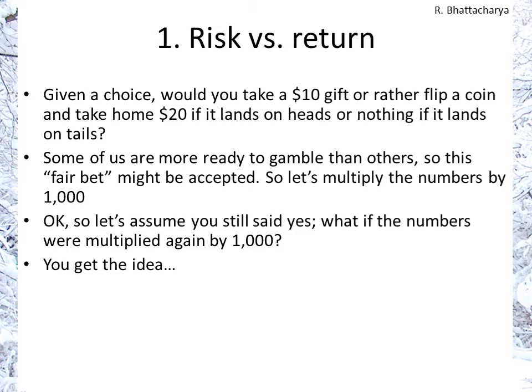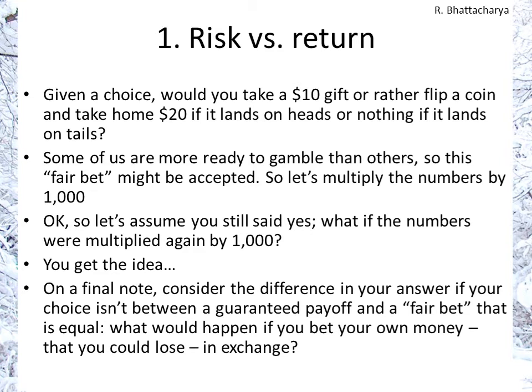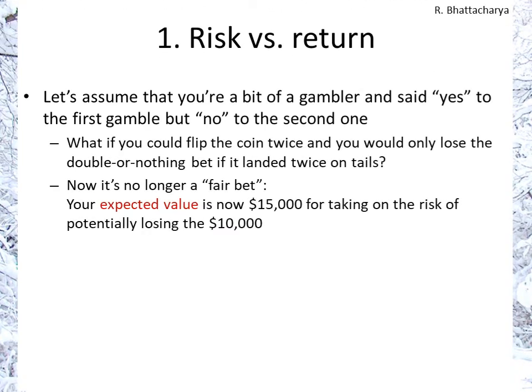This would look different if instead of being offered $10 on double or nothing, you were offered a choice of flipping a coin and either losing $10 or winning $10. Let's take an example. Suppose you said no to the second gamble — okay to gamble $10 but not $10,000. What if I changed the bet so you could flip the coin twice and only lose the $10,000 if it landed twice on tails? If it landed once or twice on heads, you'd go home with double or nothing — three chances out of four to win, one chance out of four to lose.